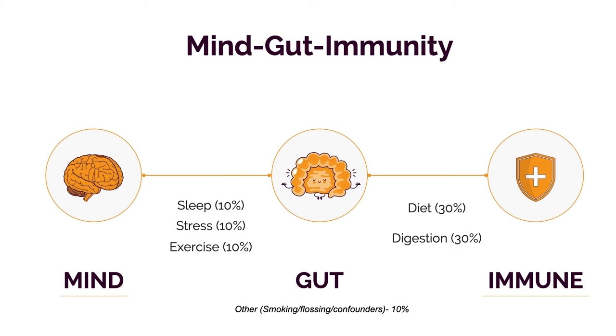If I had to assign percentages to each category, I would say diet is roughly a third and digestion is roughly a third — so combined they represent more than half the impact. That's because most of your immune system is in your gut and most of your genetic diversity is in your gut in the form of microbes. So what goes in your gut, what lives in your gut, and what leaves your gut determines inflammation. Simple as that.